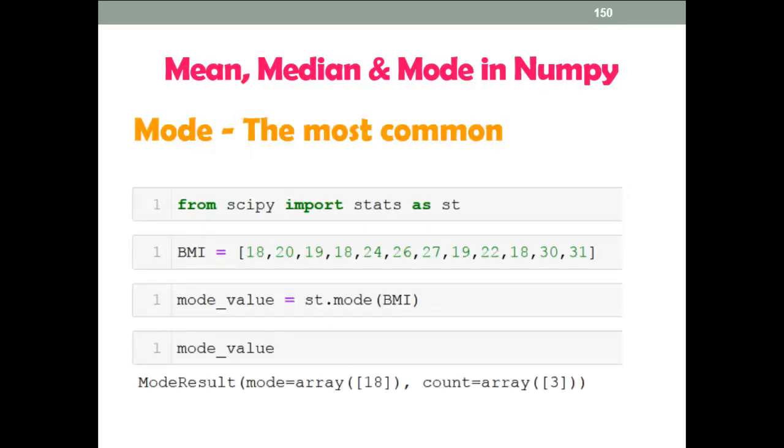Now mode, the most common value. So scipy has a module for this. That you can see from scipy import stats as st. So here you can see st.mode, and here you have to pass bmi. So now here you can see output is 18, and count is 3.